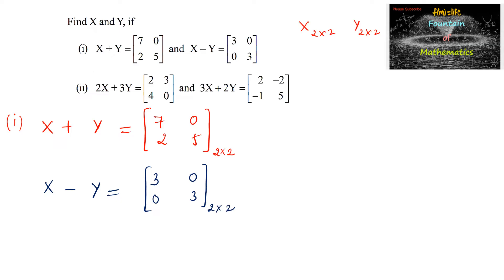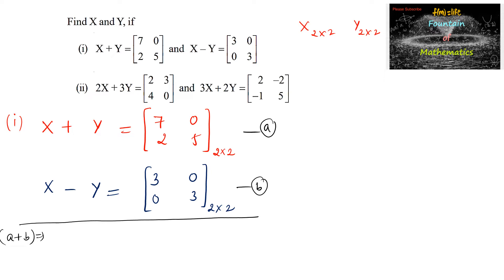Now upon adding these two matrices — call this A and this B — so A plus B gives us X plus X as 2X, and Y minus Y gets cancelled. Adding corresponding elements: 7 plus 3 is 10, 0 plus 0 is 0, 2 plus 0 is 2, and 5 plus 3 gives 8.